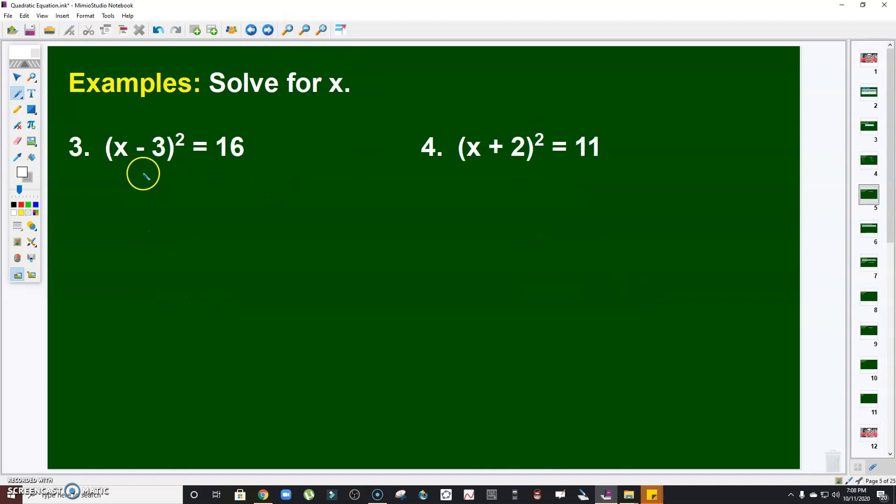Next, number 3. Solve for x. (x - 3)² = 16. Extracting the roots, I'm going to have x - 3 = ±4. Transpose 3, I'm going to have x = 3 ± 4. Therefore, x = 3 + 4, that will become 7, or 3 - 4, that will be negative 1. See that? So those are the two answers. And you can easily check it by substituting it to the original equation.